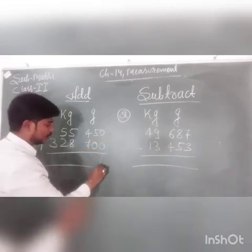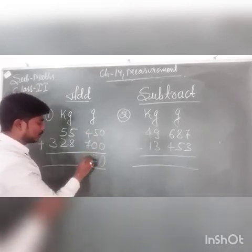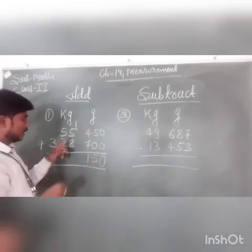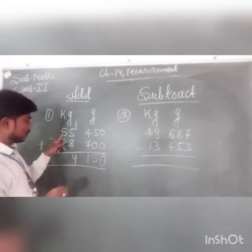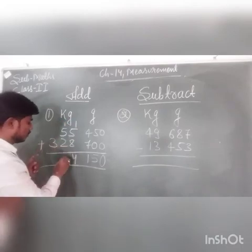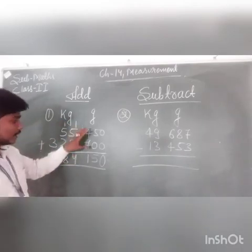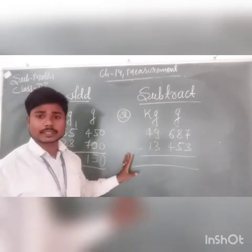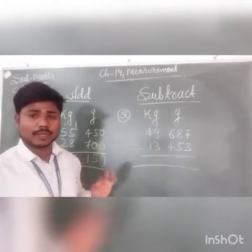Now let's add it: 0 plus 0 is 0. 5 plus 0 is 5. 7 plus 4 is 11 — write 1, carry 1. 8 plus 5 is 13, plus 1 is 14 — write 4, carry 1. 5 plus 2 is 7, plus 1 is 8. And this will become 3. In this way we can do addition based on measurement of weight.